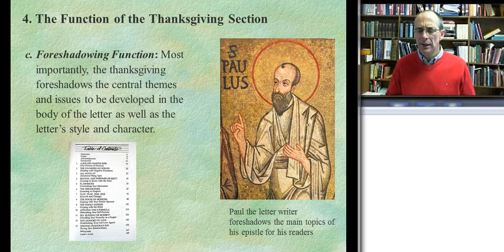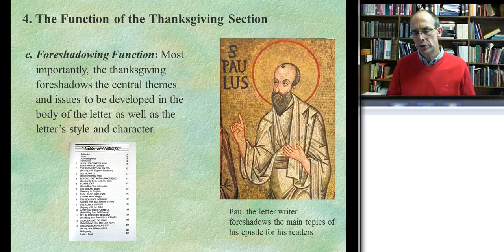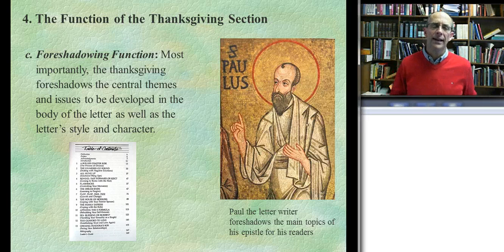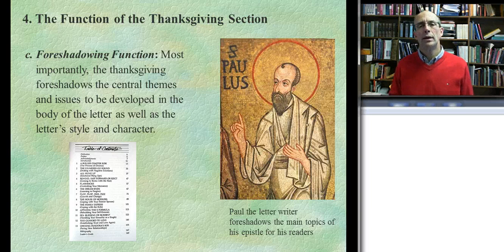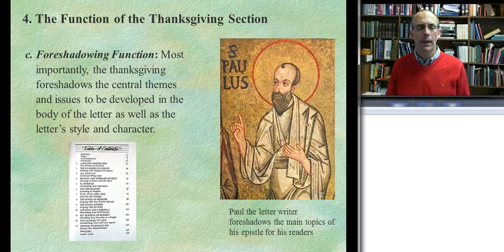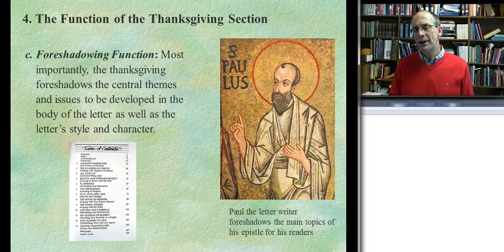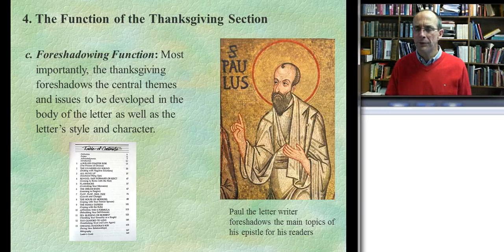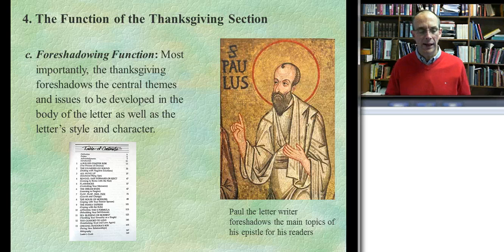The third function — and I don't think it's fair to say the most important, but it's one that often isn't fully recognized — is the foreshadowing function. I have a table of contents here, because if I have a book and want to know what it's about, I look at the table of contents. It would be overstating the case to claim that a thanksgiving is like a table of contents. However, you would be missing something if you didn't appreciate the fact that Paul is such a skilled letter writer that he already knows what he's going to talk about in the body of the letter right from the get-go, and he foreshadows those key themes already in the thanksgiving section.